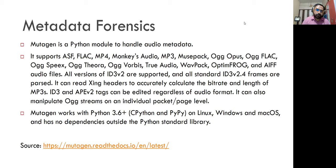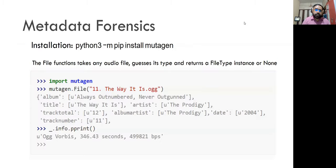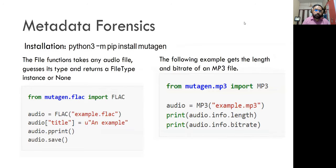The next step is metadata forensics. Metadata is associated with every type of file — text, audio, image, source code, or any file. Mutagen is the Python module that handles audio metadata, supporting various audio formats such as MP4, FLAC, MP3, OGG, and more. It works with Python 3.6, and you can find more information on the Read the Docs website. It is installed via pip. The file function takes any audio file as input, guesses its type, and returns the file type instance. The code also extracts the length and bitrate of an MP3 file.